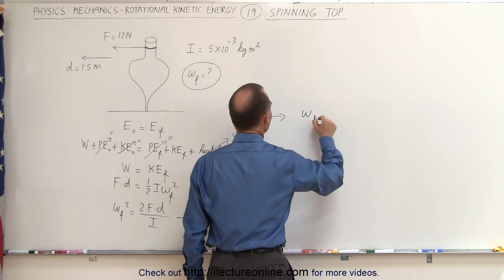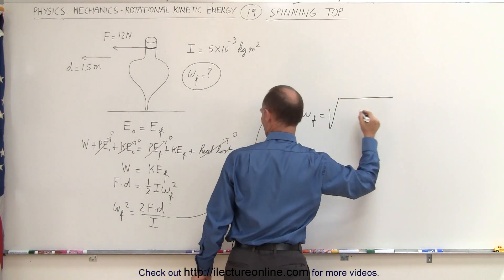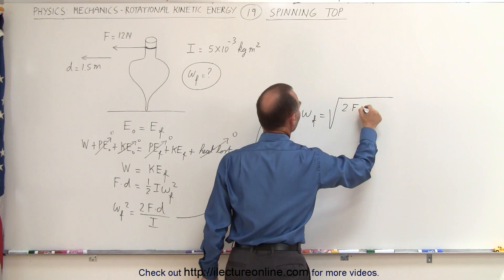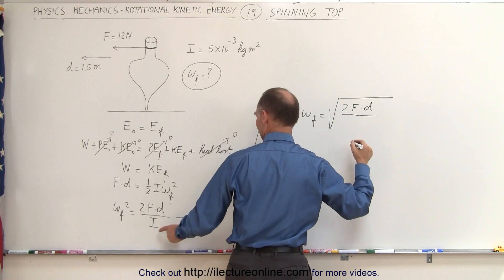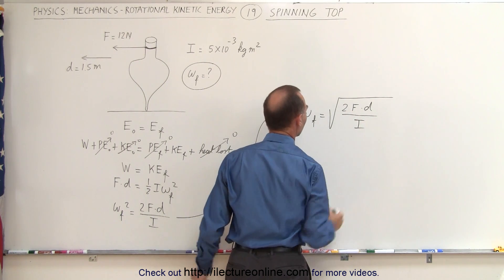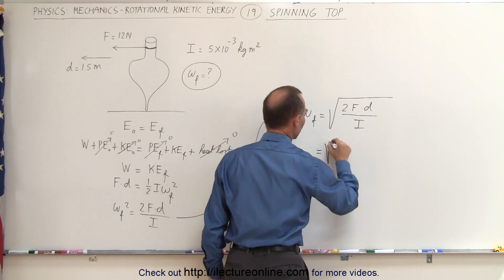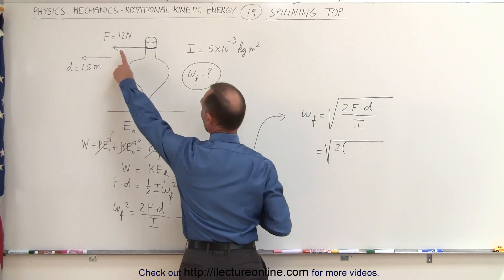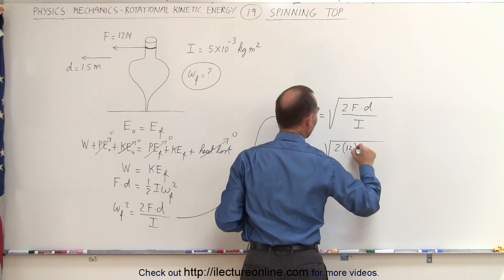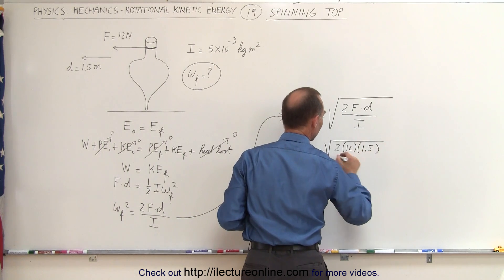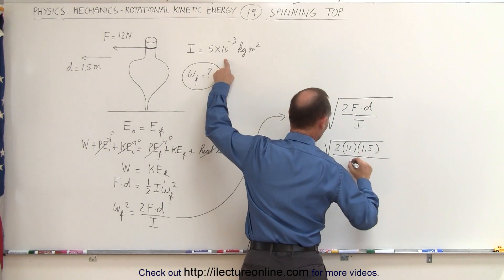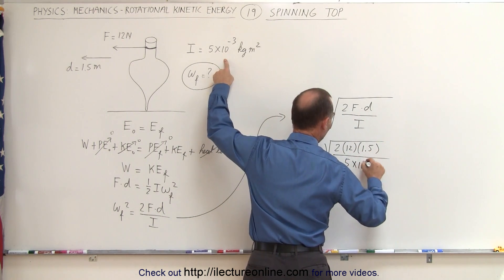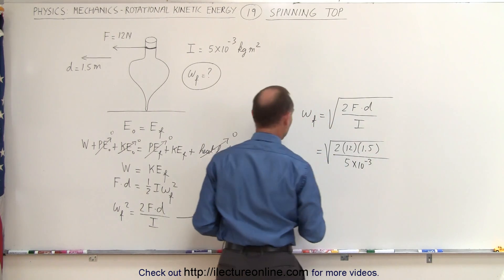This is equal to the square root of two times the force applied is 12 newtons. The distance covered 1.5 meters and the moment of inertia 5 times 10 to the minus 3 kilogram meter squared. So the final result then is omega final is equal to, for that we're going to need a calculator.